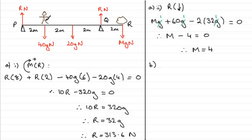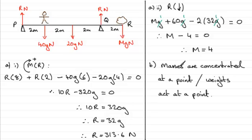So we're reducing these two masses to particles, point masses. So we can say that for part B, the masses are concentrated at a point or the weights act at a point rather than being spread about.